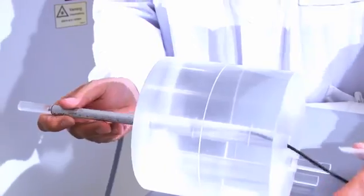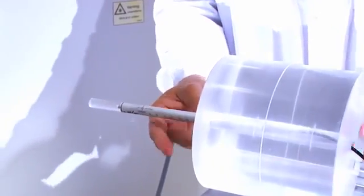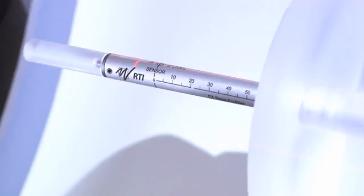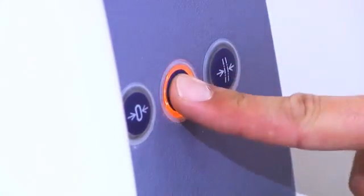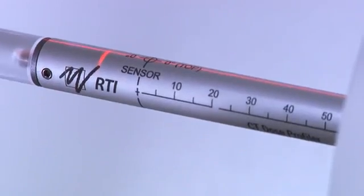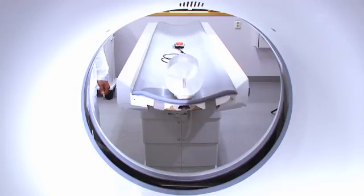First, you have to put the CT dose profile detector into the correct position. A tip is to use the phantom you just used as a stand. Align the detector with the lasers. Perform a new scout.